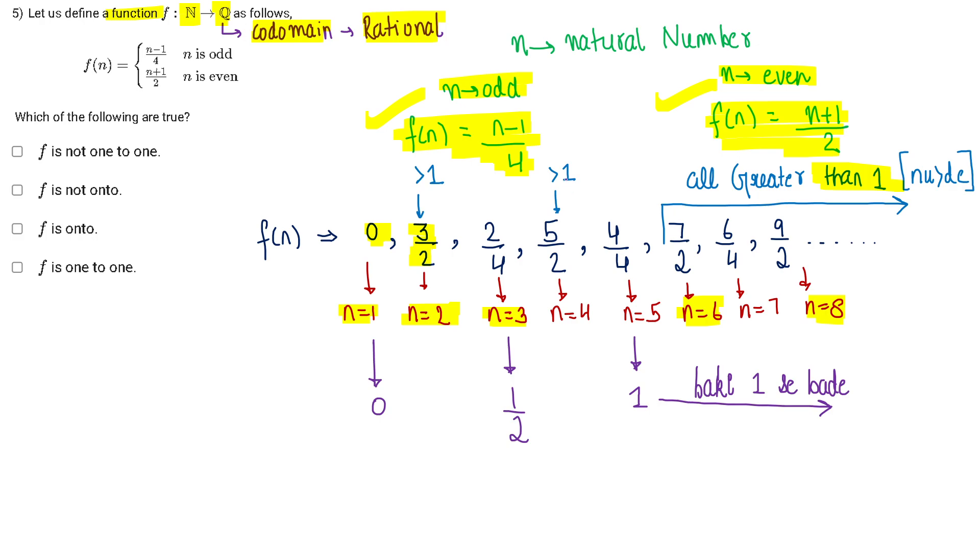So all the values of function which are less than 1 are 0, 1/2 and 1, that's it. The rest of the function values are going to be greater than 1. So this much we know is correct.